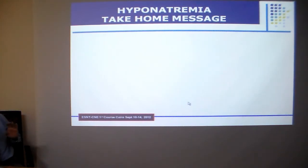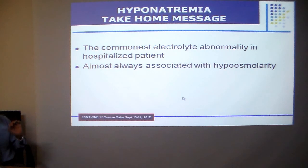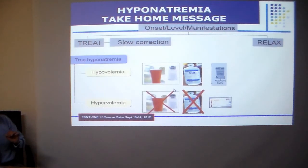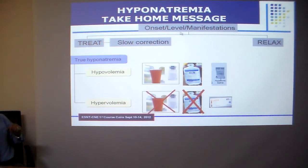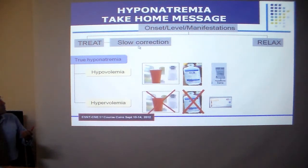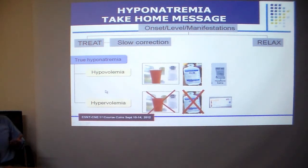Take-home messages: Hyponatremia is the commonest electrolyte abnormality in hospitalised patients. It is almost always associated with hypo-osmolarity. Treatment depends on onset, level, and manifestations. In chronic stable asymptomatic patients, you may opt not to treat at all. If you choose to treat, differentiate between hypovolemia and hypervolemia, because treatment is completely different — in hypovolemia you give fluid and salt, whereas in hypervolemia you restrict fluid and salt.